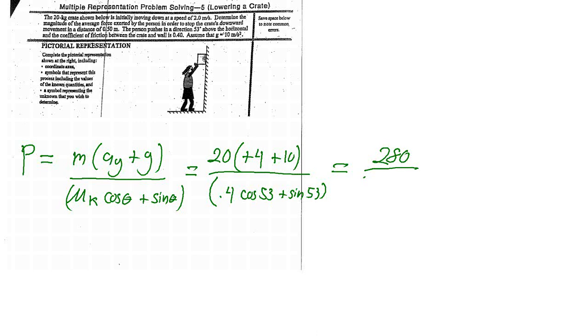All right, so we're back again trying to evaluate this expression in order to get the pushing force that the person exerts to make this box slow down. We'd figured out the numerator and we were working on the denominator.